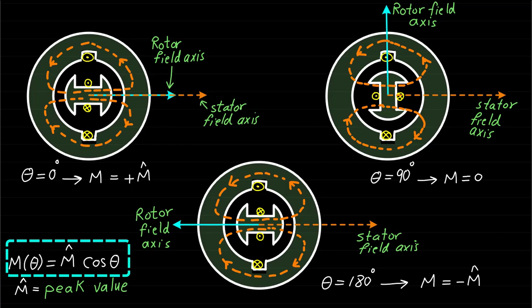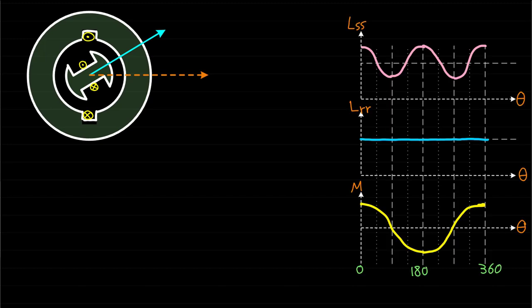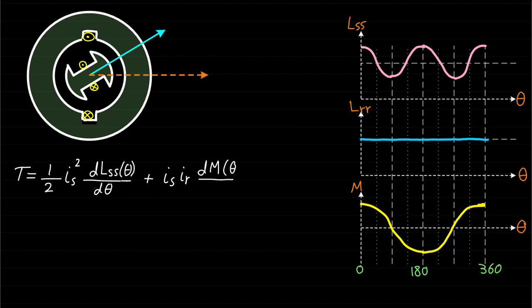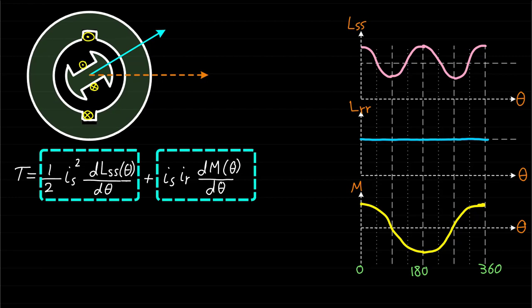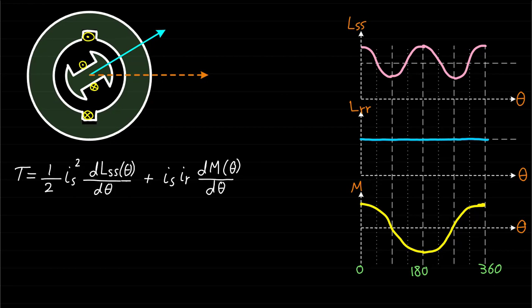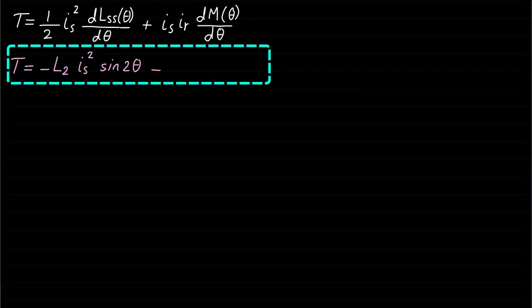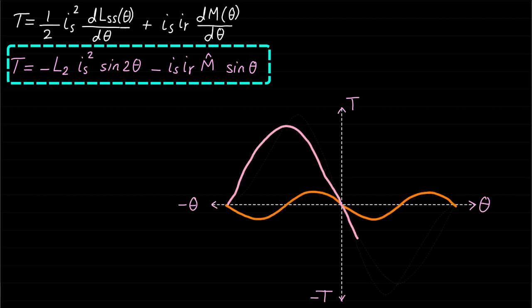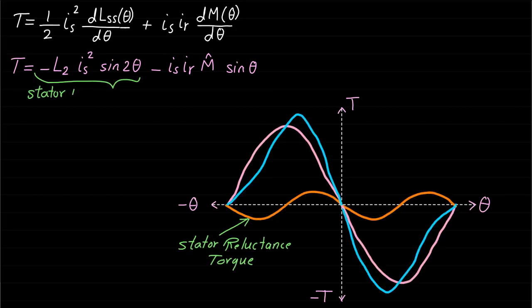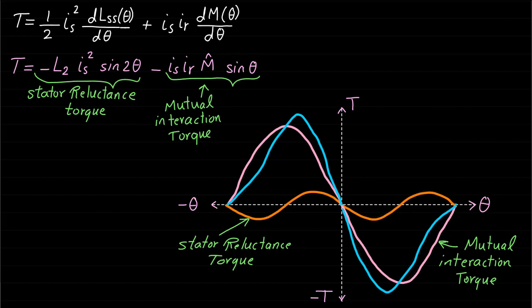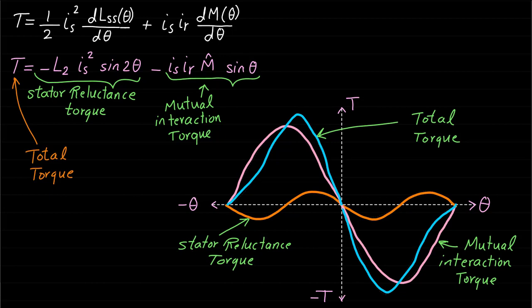In conclusion, the inductance relationships with respect to rotor position of this machine are as shown. Therefore, the total torque expression will equal only two components: the stator reluctance torque component and the mutual interaction torque component. The rotor reluctance torque component is zero because the rotor self-inductance does not change with rotor position. The orange waveform represents the stator reluctance torque, the pink waveform represents the mutual interaction torque, and the blue waveform represents the total torque as the sum of both components.